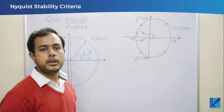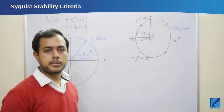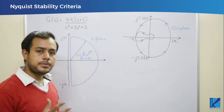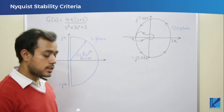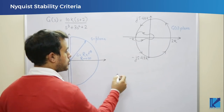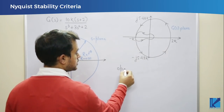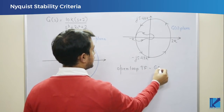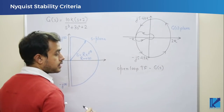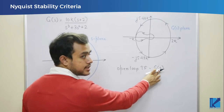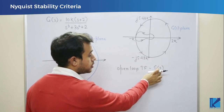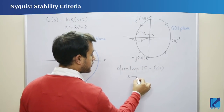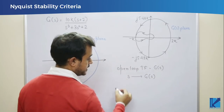In this video we will be discussing Nyquist stability criteria. First, let us talk about the Nyquist plot. We have an open loop transfer function, that is g(s). Whatever value of s you put into the transfer function, you will get a corresponding value of g(s). For different values of s, you will get different values of g(s).